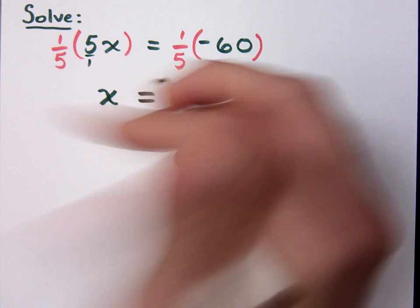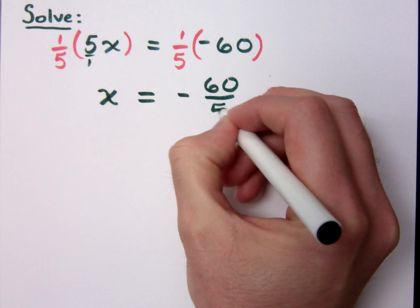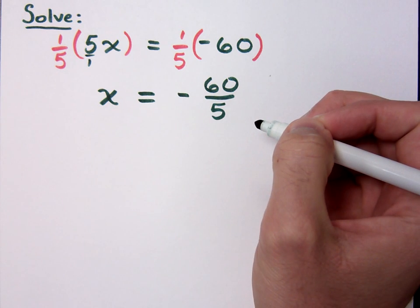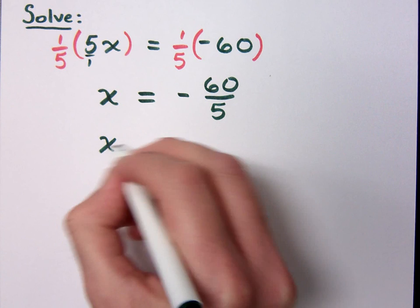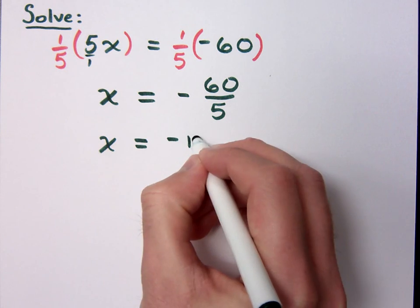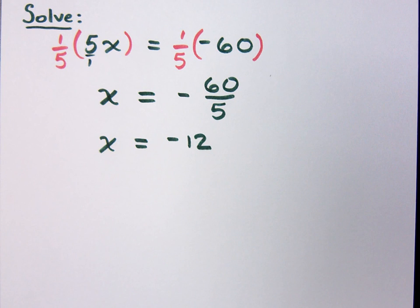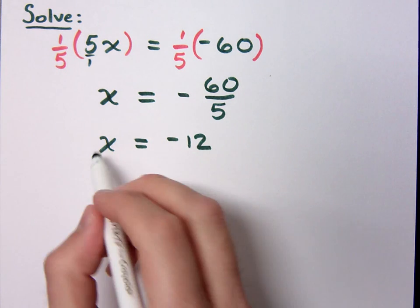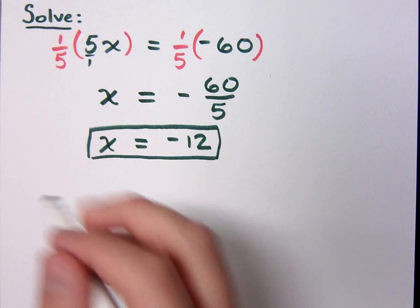And then on the right side, you have something very similar to what we had yesterday, which was negative 60 divided by 5, right? And that just gives me negative 12. So if I know that the reciprocal can be used to get your x by itself, that's going to be very useful for these next few problems.